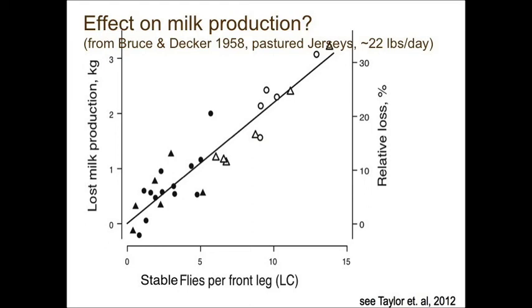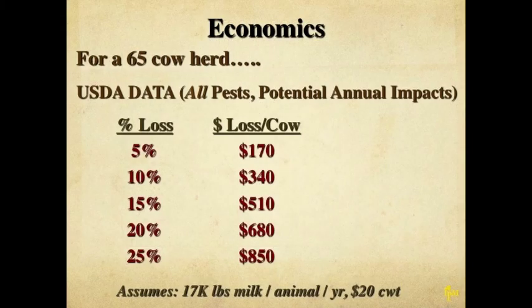Let's look at the impact of stable flies as one example of flies in and around dairy facilities and their impact on milk production in pasture jersey cows. Looking at the bottom axis, you can see an increasing number of stable flies per front leg of the animals from 0 to 15, and a relative loss of percent of milk production caused by these various numbers of insects. A high population of stable flies in this study caused a loss of 22 pounds of milk per day. Thinking about economics, a cow averaging 17,000 pounds of milk per animal at a $20 per hundredweight value, a five percent loss due to pest problems causes about $170 loss per animal.